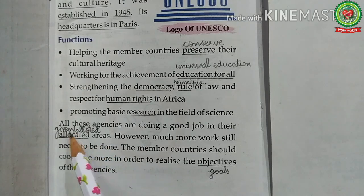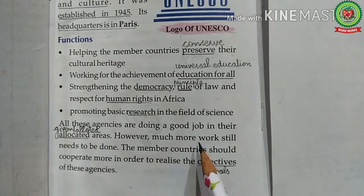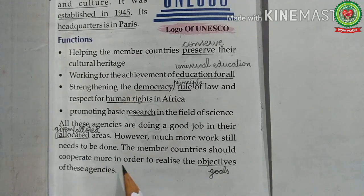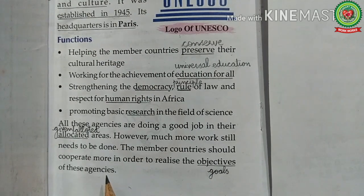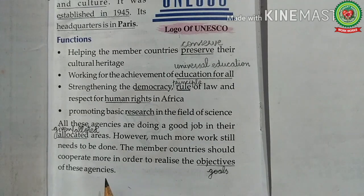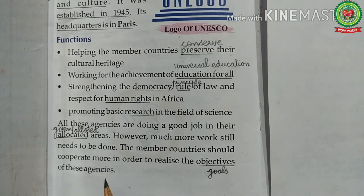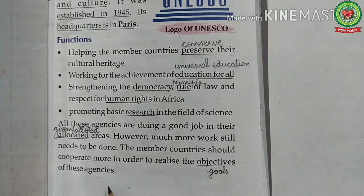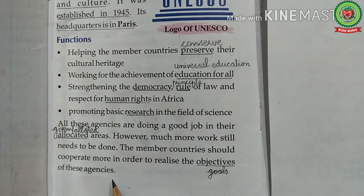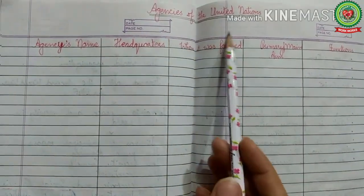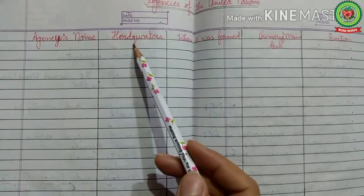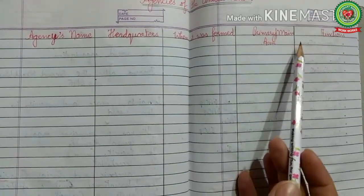However, much more work still needs to be done, and member countries should cooperate more to realize the objectives of these agencies. To conclude, these agencies are doing immense good to mankind in areas such as economic development, human rights, international trade, care of refugees, education, agriculture, health, housing, and child and mother care. Overall, these agencies are working within their own spheres for the betterment of the world. Your homework is to complete the chart of agencies of the United Nations, mentioning the agency's name, headquarters, when it was formed, primary aim, and its functions.